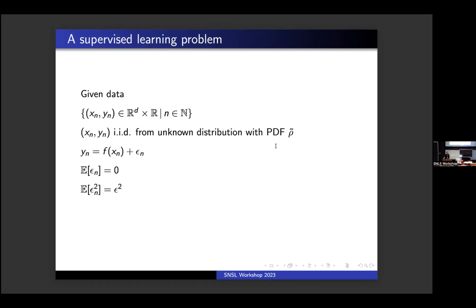Suppose we are given some data — some X and Y points, X points on R^d and Y points on R. We assume that the data comes from some unknown distribution rho tilde, and we also assume that there exists an underlying function F such that if you add some noise to F and evaluate any X point, you get Y. We assume the expected value of the noise is zero and it has some bounded variance. This is a standard supervised learning problem — how do we find F? Can we approximate F given only the data?